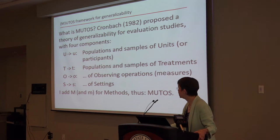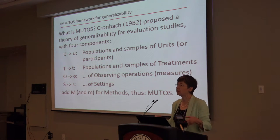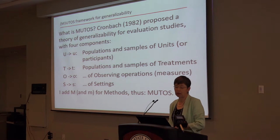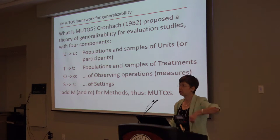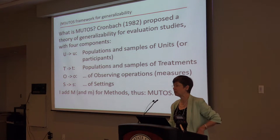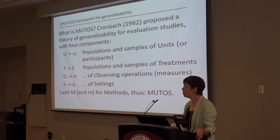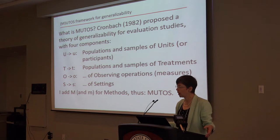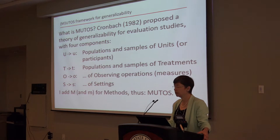The big U is the population of units; the small u is the sample of units, which is essentially what you find in a meta-analysis. The same thing applies with T and little t. I'm adding M for method, because when we get to a meta-analysis we have studies done in different ways. Theory is important because it can tell us what are the big U's that you want, what are the big T's you're interested in, and what observing operations are appropriate measures of your outcomes.